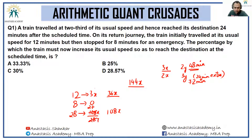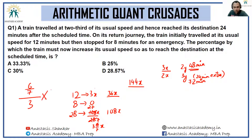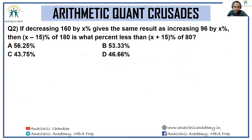The new speed required is 108x divided by 28, which simplifies to 27/7x, or 3 and 6/7 x. The percentage increase over the usual speed of 3x is 6/7 on a base of 3, giving 2/7, which in percentage terms is 28.57%. So the answer is option D.